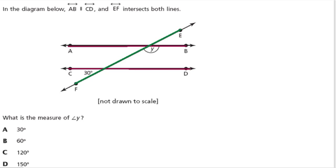What is the measure of angle Y? Well, we know that this is 30 degrees, which means its corresponding angle right here, in the same position at the intersection, also equals 30 degrees.